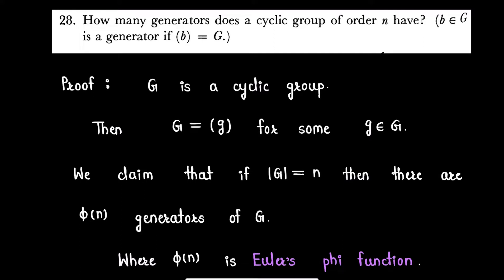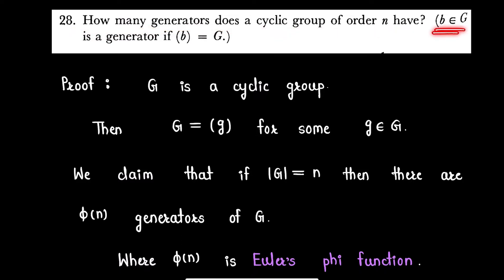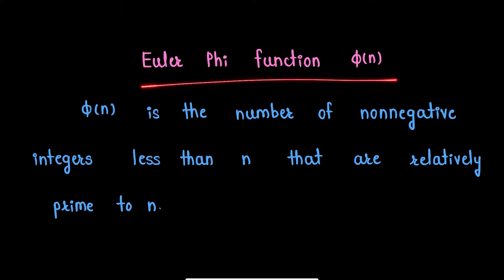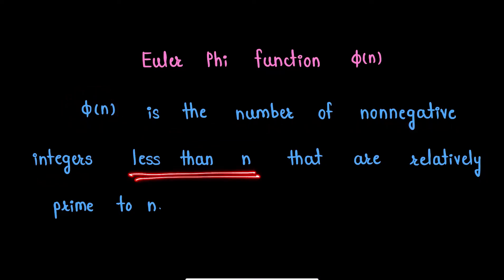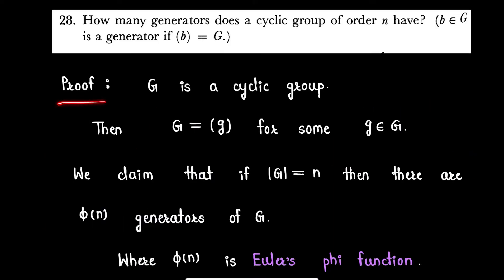In this video I am going to solve an exercise question from the book 'Topics in Algebra'. The question is: how many generators does a cyclic group of order n have? An element b of group G is a generator of G if G equals the cyclic group generated by b. To prove this result we need the concept of the Euler phi function. Euler phi function phi(n) is the number of non-negative integers that are less than n and are relatively prime to n.